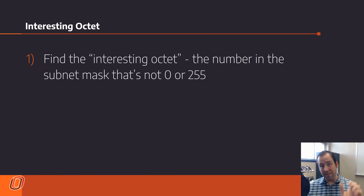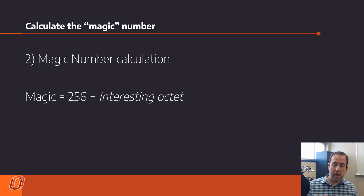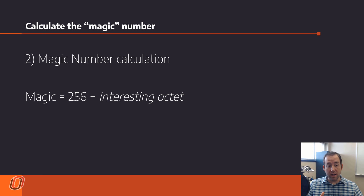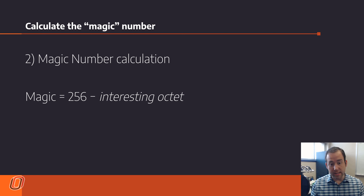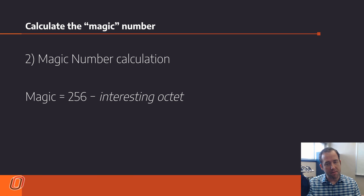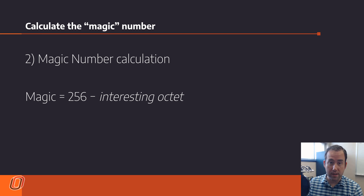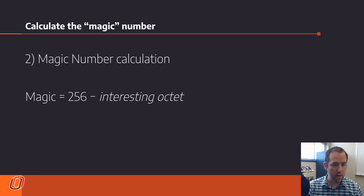Find that interesting octet number in the subnet mask and find that number in the IP address. Once you've identified the interesting octet, you can do the magic number calculation. The magic number calculation is 256 minus whatever that number is in the subnet mask — the number that's not 255 or zero. We will do some examples of the whole process, so don't worry about it. I'm just introducing the process right now.